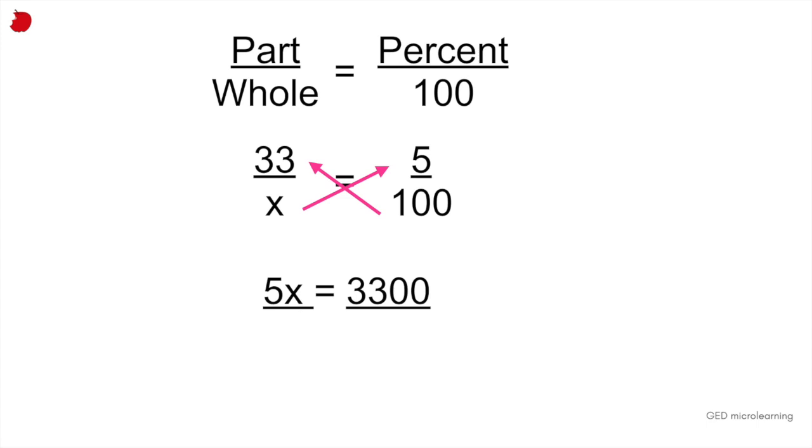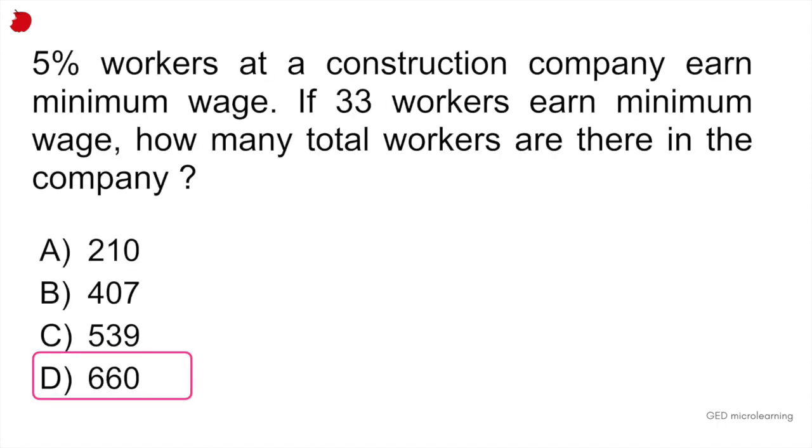And now pretty straightforward. All you have to do is isolate that x and you would do that dividing both sides by 5. The reason we're doing this is because now on the left side, we can get rid of these two numbers because 5 divided by 5 is equal to 1, and that gives us 660. So that 660 represents the total number of workers in the company. 33 is part of those 660, which is the ones that earn minimum wage, and they represent 5% of the company.